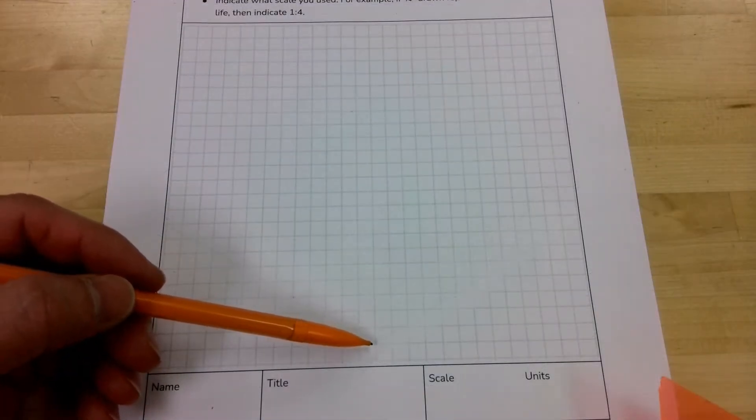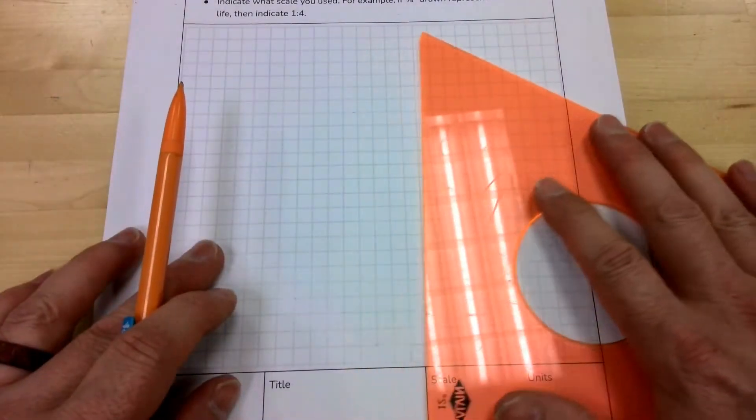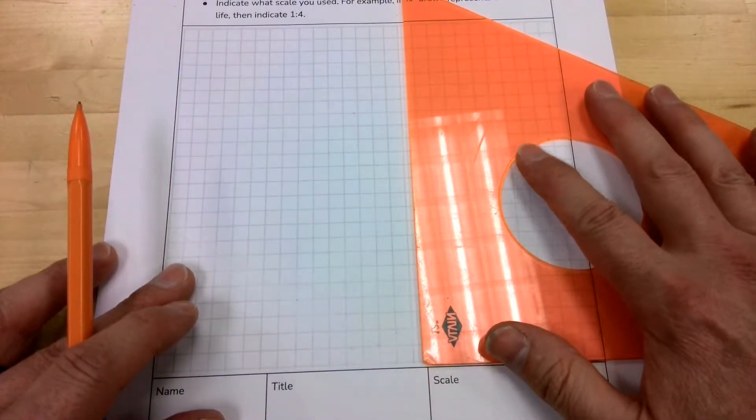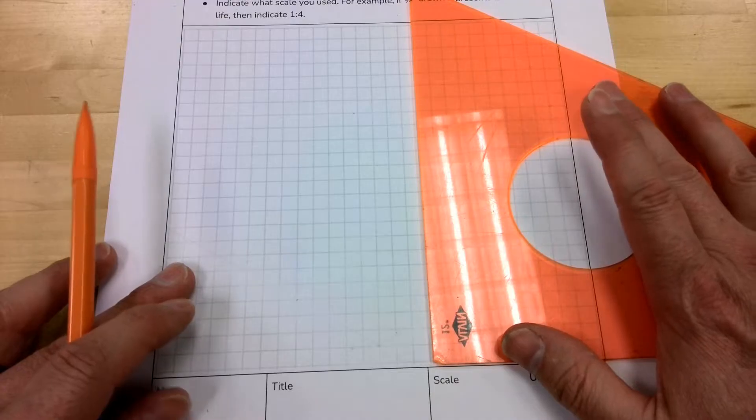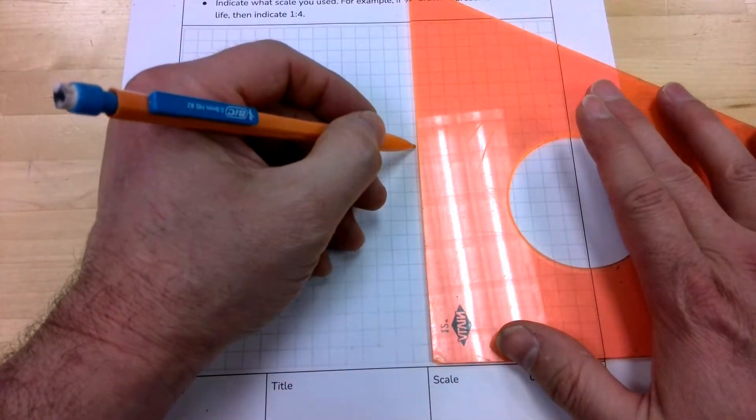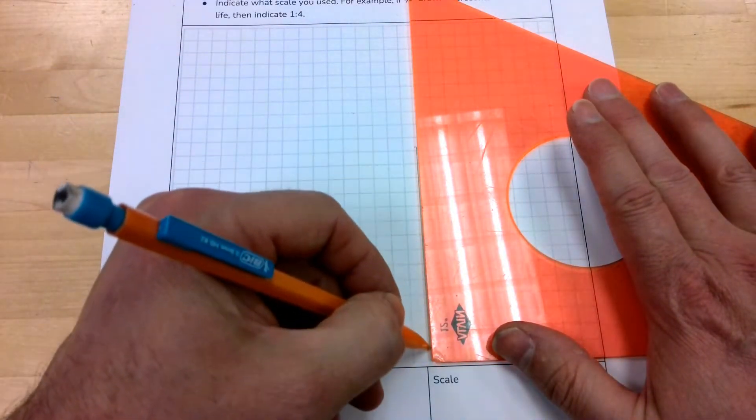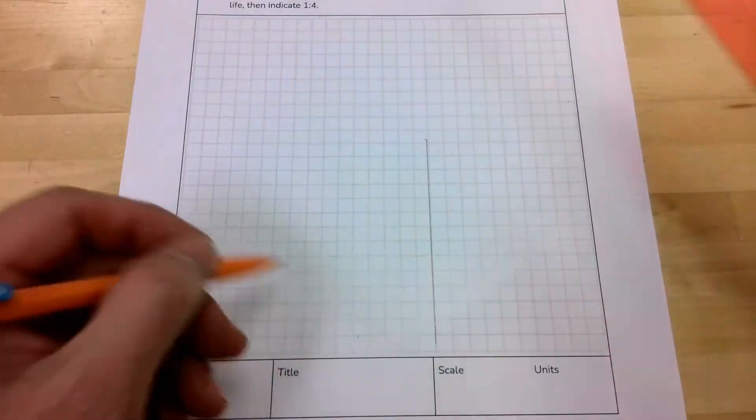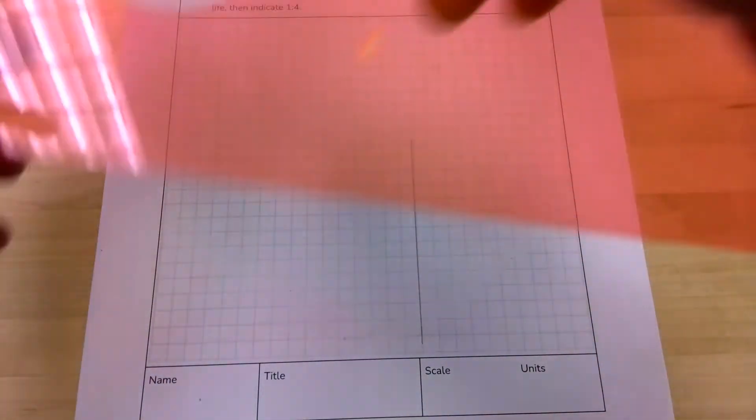So first we establish our 90 degree angle, and since I'm drawing an iPod I know that it's longer or taller than it is wide, so I'm going to start off to the side a little bit and establish my vertical center for the iPod not in the center of my graph paper.